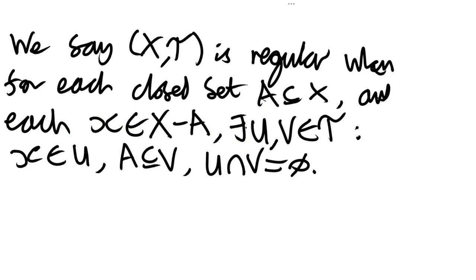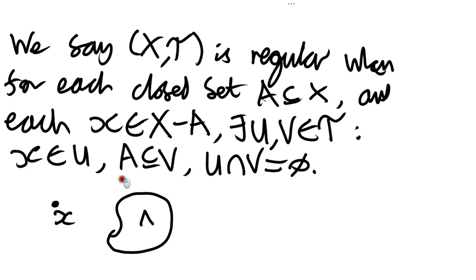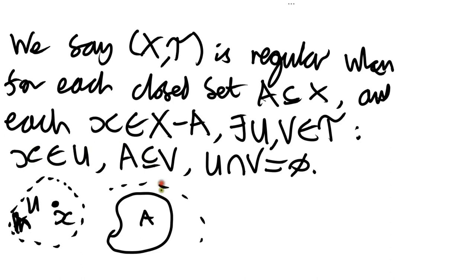That's our definition of when a topological space is regular. Diagrammatically: for any particular point x and any closed set A which doesn't contain x, we need open sets U and V — U just contains x, V contains A — and these two open sets don't intersect with each other.